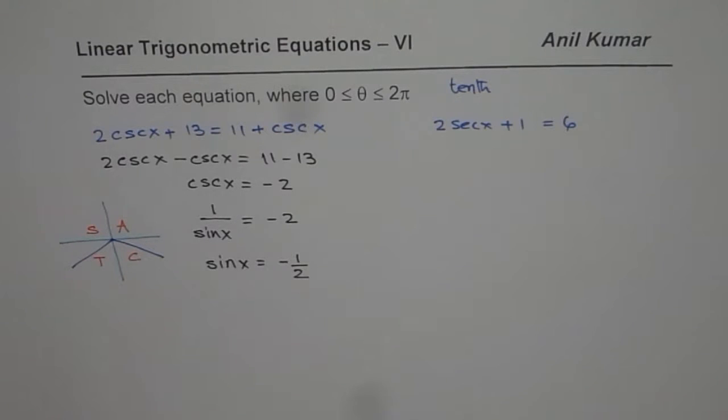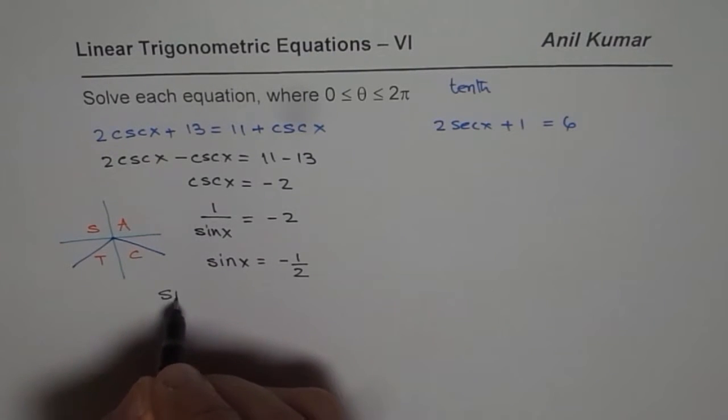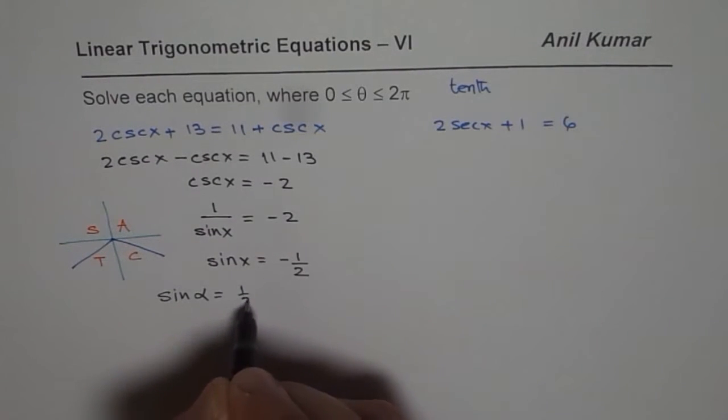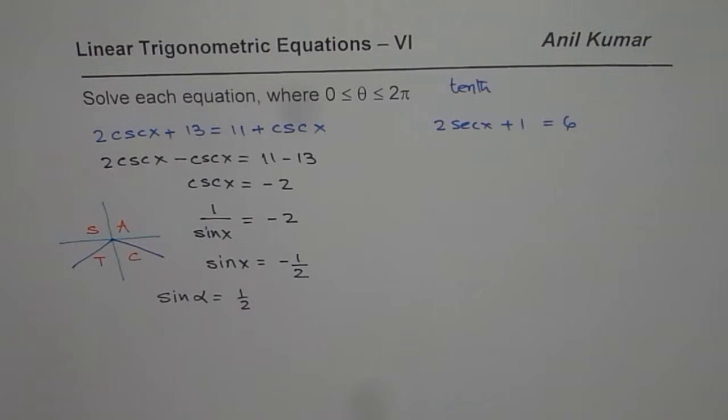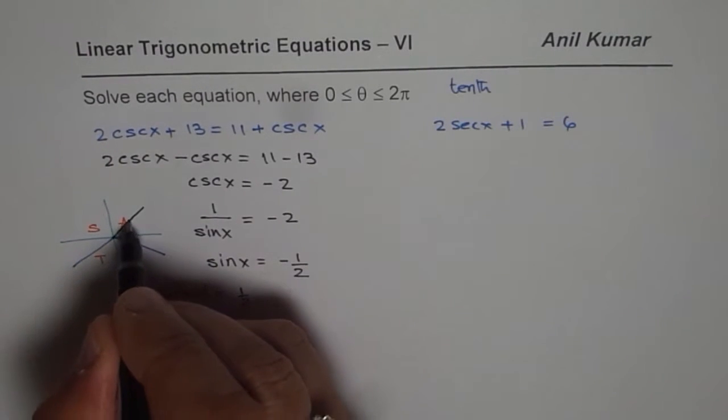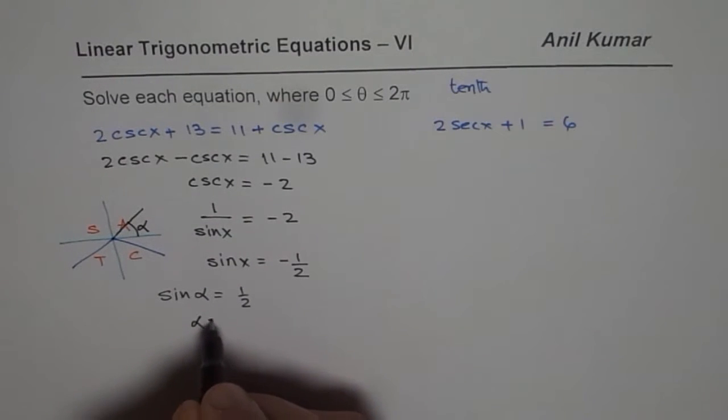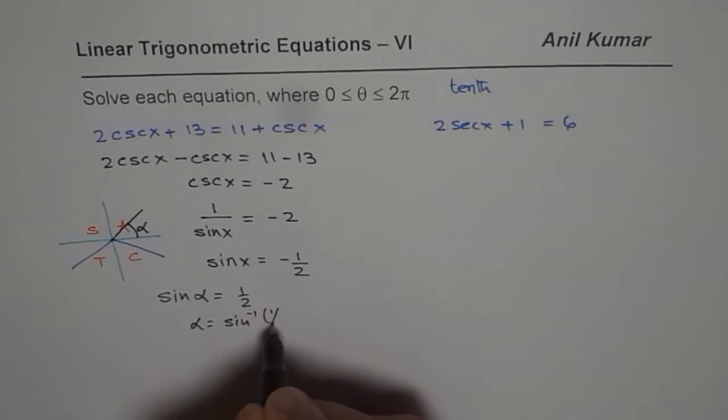Steps to solve this: we have to first consider the related acute angle α. So we can say sin(α) equals to the positive value. Always take the absolute value since in quadrant 1 all trigonometric ratios are positive. So we have to find the angle α, which has to be positive.